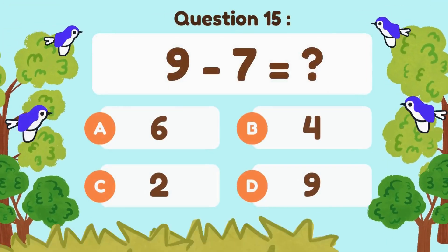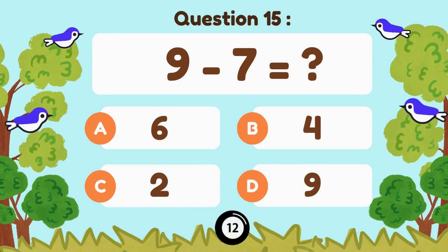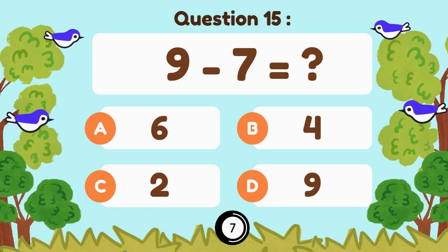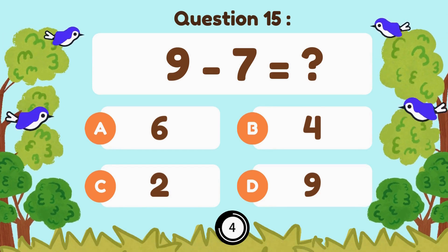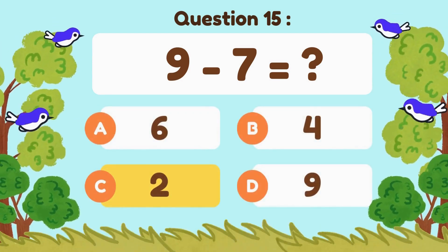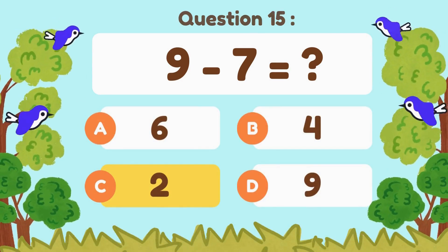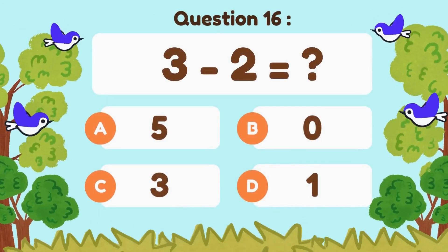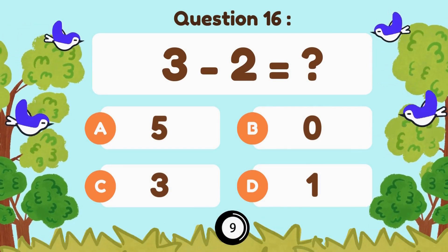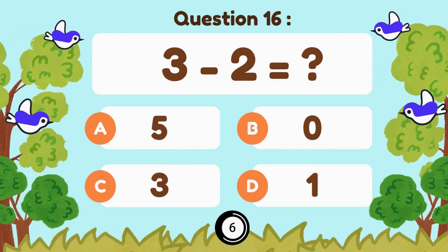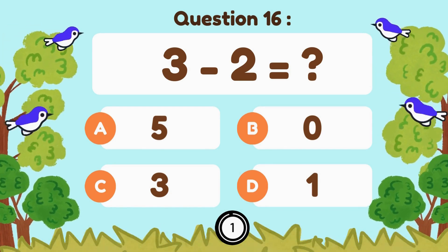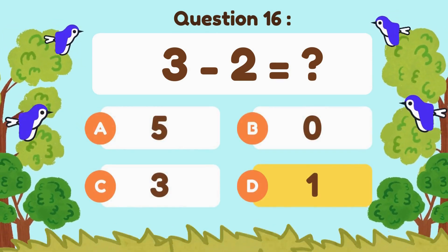9 minus 7... 9 minus 7 is 2. 3 minus 2... 3 minus 2 is 1.